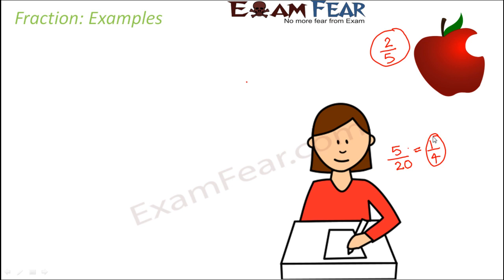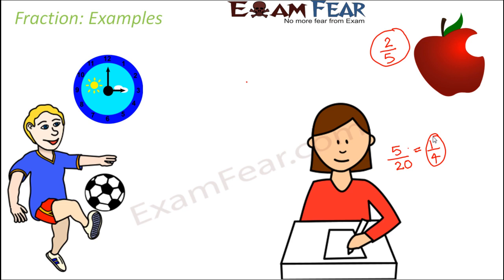Let's say a boy practices football every day for 10 hours. If we ask what fraction of the day does he practice football — there are 24 hours in a day, and out of those 24 hours he spends 10 hours practicing football — that means he spends 10 by 24th of the day in football. These are all examples of fractions, and everywhere it is a ratio of two integers such that the denominator is not zero. Fraction always answers: how much of the total.